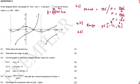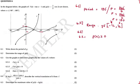Question 6.3.1: use the graphs to determine the values of x where F(x) ≥ 0. We need to find the x-values where F of x is bigger than or equal to zero — meaning where the graph of F is above the x-axis, where y-values are positive.